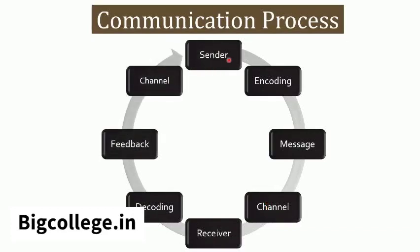The process of communication starts with the communicator or sender who has something to communicate with others, which can be an idea, information, fact or anything else. Thereafter, the sender encodes the message by selecting the language in which the receiver can correctly understand. The medium of expression can be speaking, writing, eye contact, facial expression, gesture, posture, etc. Thereafter, the message is developed by the communicator using the right set of words and language.